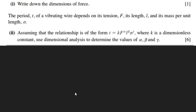We have another question here. We have been asked to write down the dimensions of force. The second question says the purity of a vibrating wire depends on its tension force, its length, and its mass per unit length. Assuming the relationship T equals k times F to the power a, L to the power b, where k is a dimensionless constant, use dimensional analysis to determine the values of a, b, and y. Six marks.